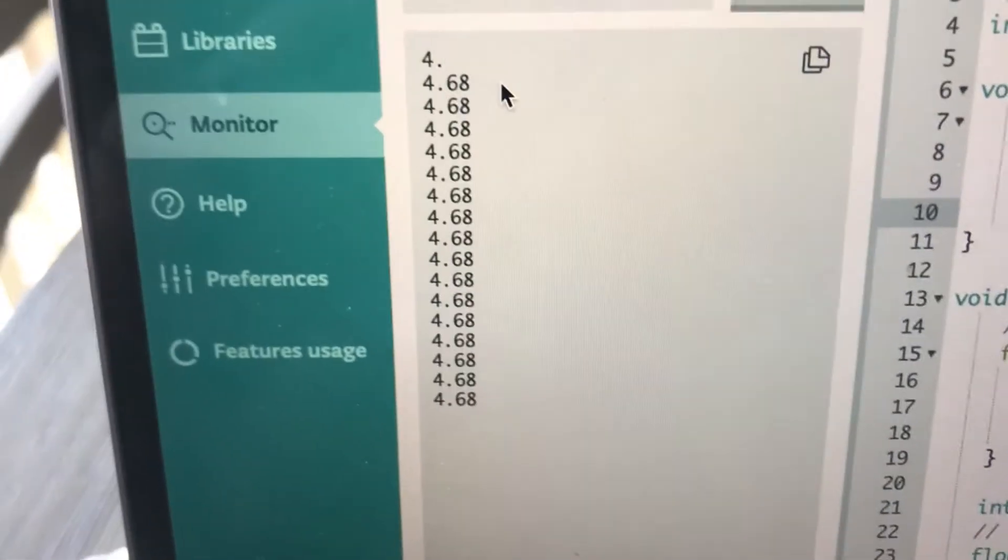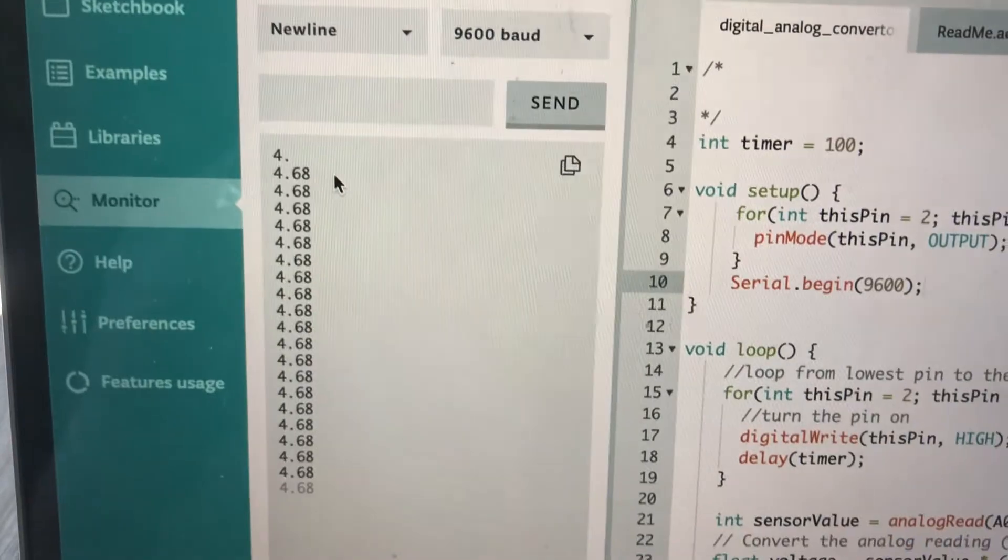It's outputting the same thing because the bits are all one at first. But if you change it, it'll output something different every single time.